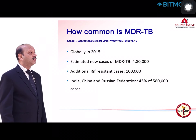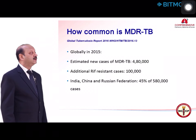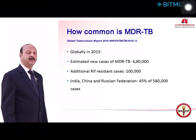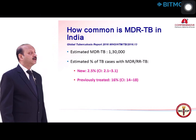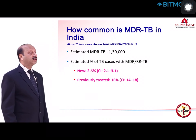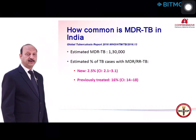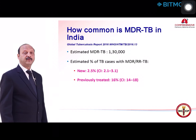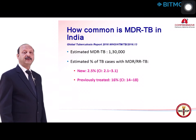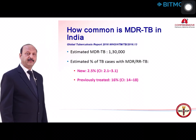Looking at how common MDR tuberculosis is globally, in 2015 alone there were 4.8 lakh cases of MDR tuberculosis, and additionally mono-resistant cases were 1 lakh. India, China, and the Russian Federation contributed around 45% of these 5.8 lakh cases. In India in 2015, there were an estimated 1.3 lakh MDR cases. Among new TB cases, 2.5% are MDR tuberculosis, and among previously treated cases, 16% are MDR tuberculosis.